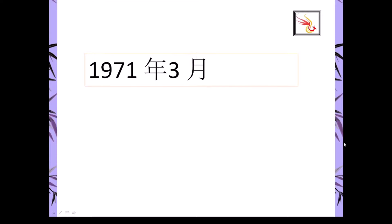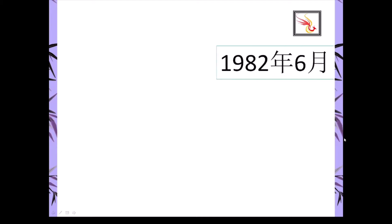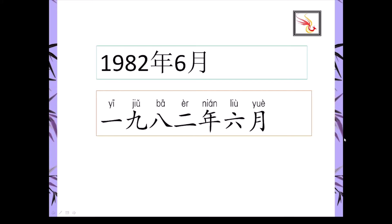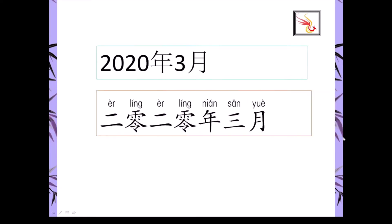March 1971: Yi jiu qi yi nián sān yuè. June 1982: Yi jiu ba er nián liù yuè. March 2020: 2020年三月.